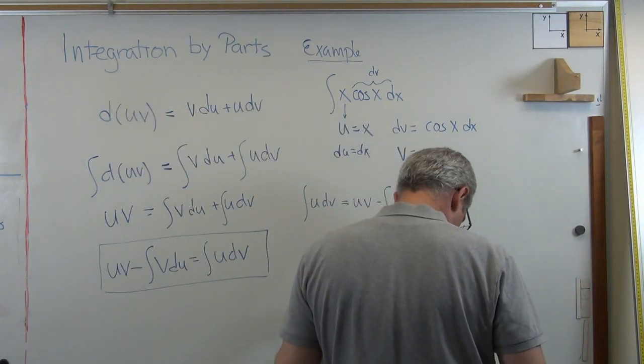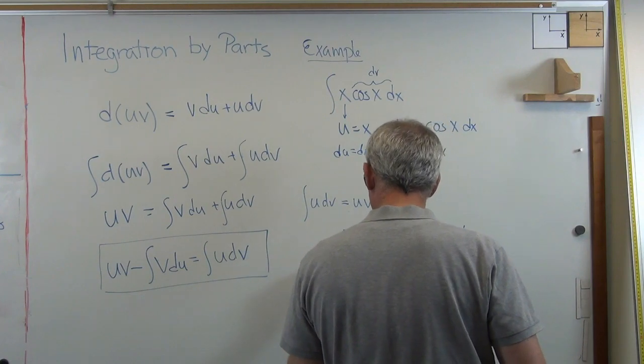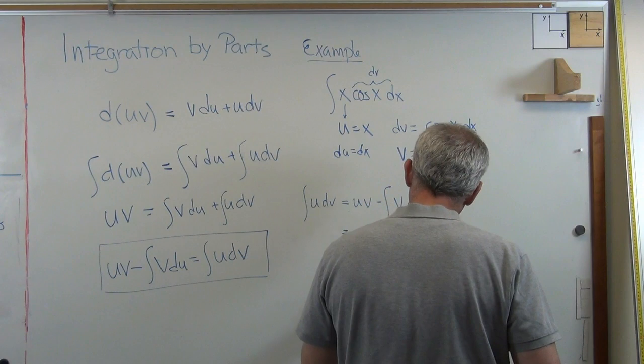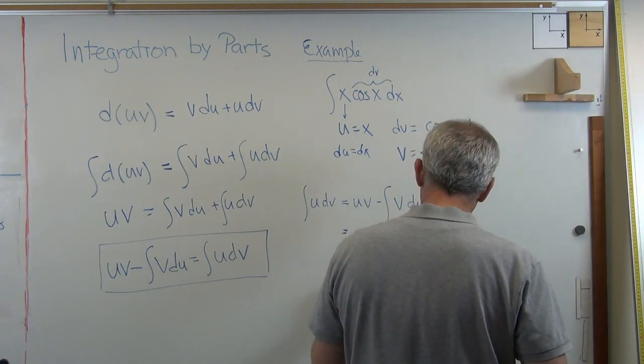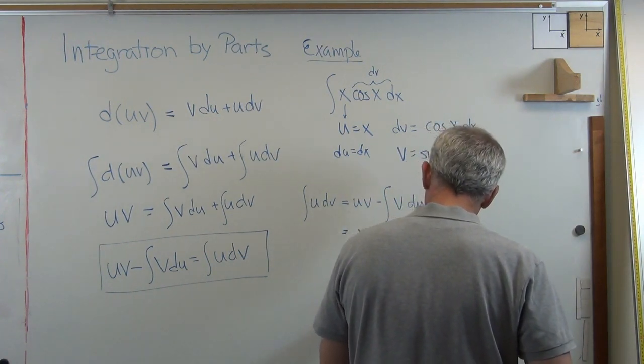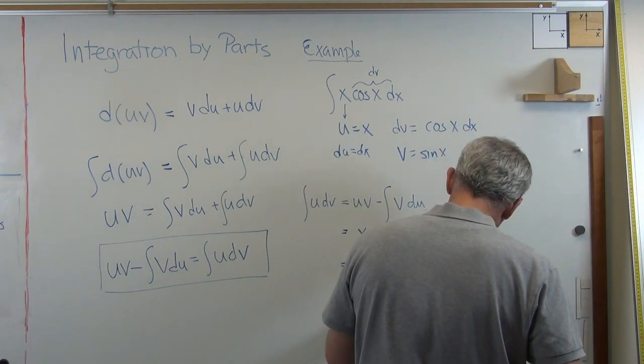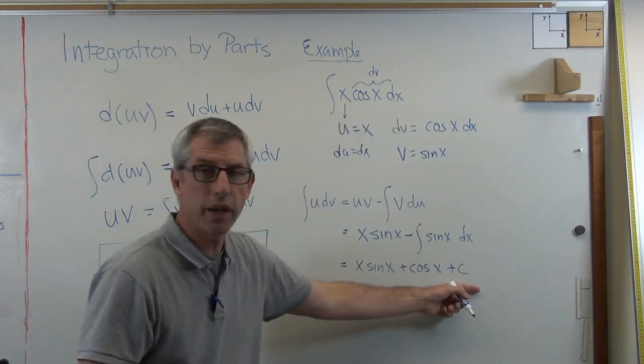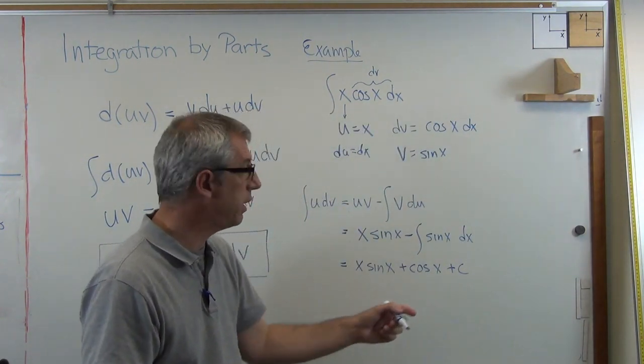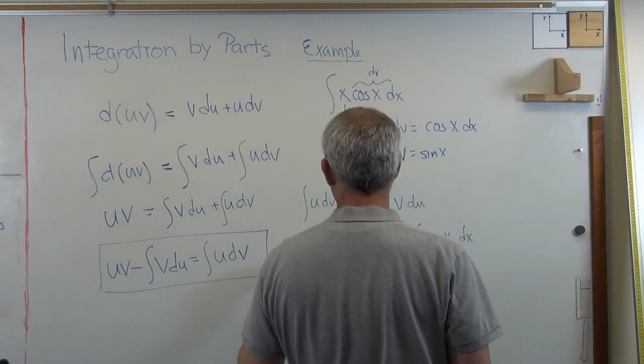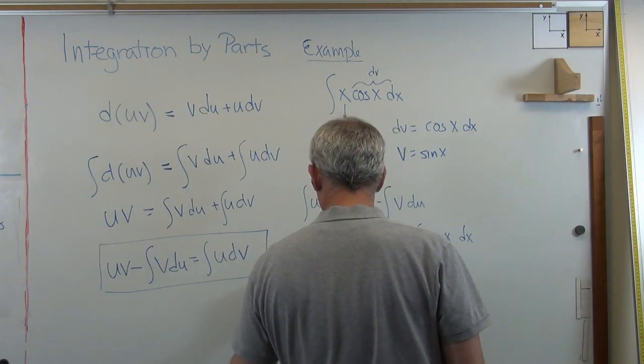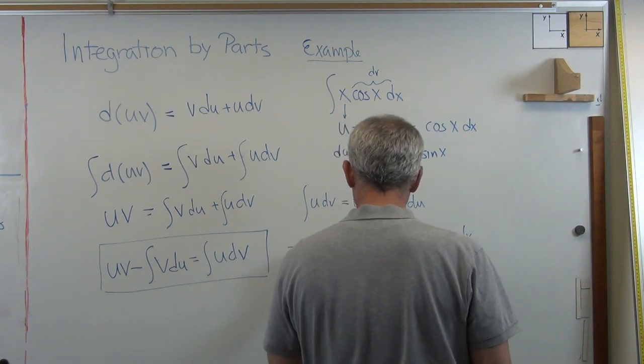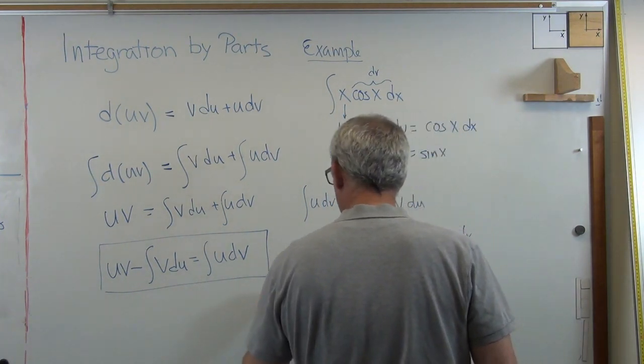And so what I get out the other end is x sine x and the integral of sine is negative cosine. And since this is an indefinite integral, I have the integration constant there.